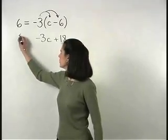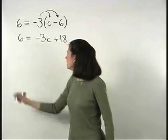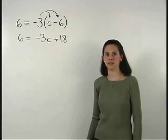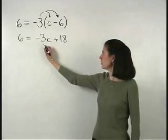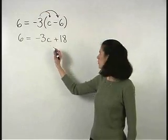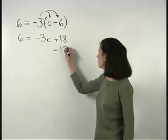So our equation now reads 6 equals negative 3c plus 18. Our next step is to get the c term by itself on the right side. So we subtract 18 from both sides.